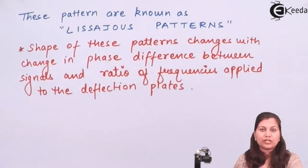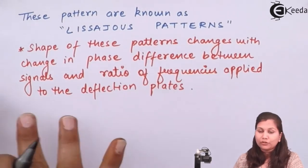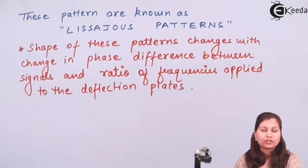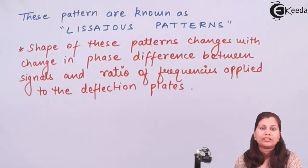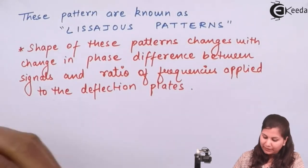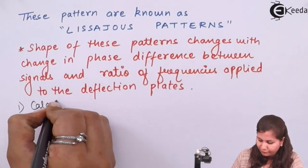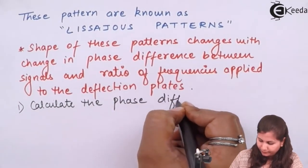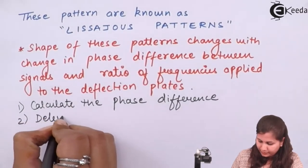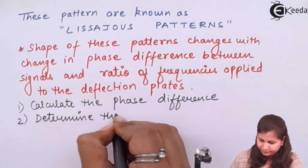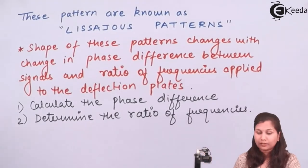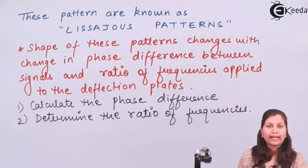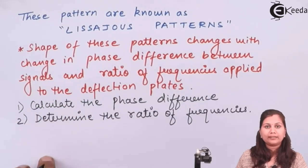As the shape of the Lissajous pattern changes with respect to the change in the phase difference and the ratio of frequencies between the two signals, we can use these Lissajous patterns for two applications: one is to measure the phase difference between the two signals, and the second is for the measurement of the ratio of the frequencies of the two signals. Here in this video, we are studying how we can calculate the phase difference using the Lissajous patterns obtained in the CRO.